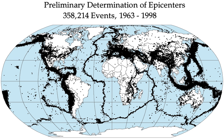A tectonic earthquake begins by an initial rupture at a point on the fault surface, a process known as nucleation. The scale of the nucleation zone is uncertain, with some evidence—such as the rupture dimensions of the smallest earthquakes—suggesting that it is smaller than 100 meters, while other evidence, such as a slow component revealed by low-frequency spectra of some earthquakes, suggests that it is larger. The possibility that the nucleation involves some sort of preparation process is supported by the observation that about 40% of earthquakes are preceded by foreshocks. Once the rupture has initiated, it begins to propagate along the fault surface. The mechanics of this process are poorly understood, partly because it is difficult to recreate the high sliding velocities in a laboratory.